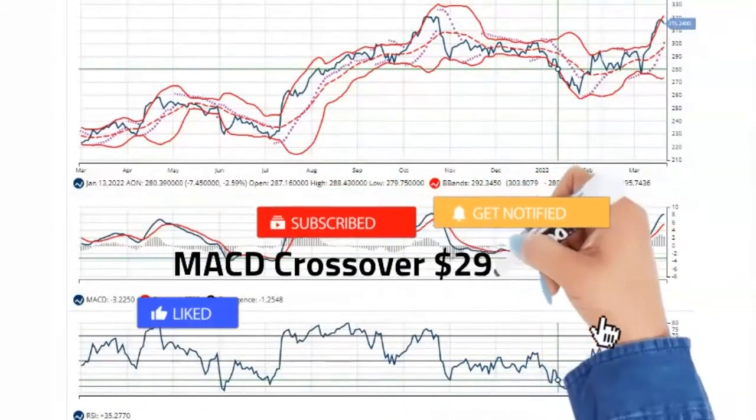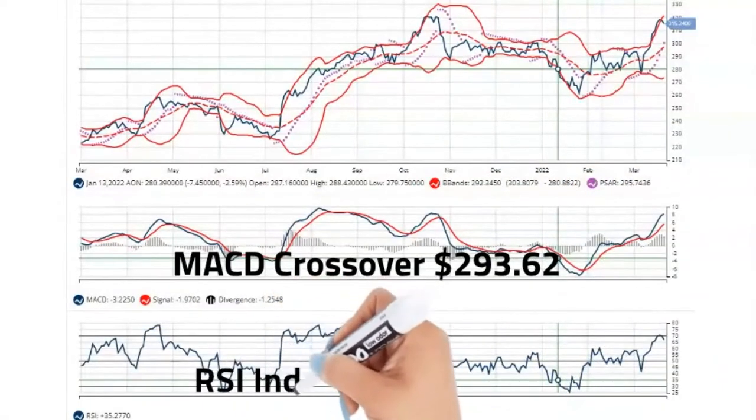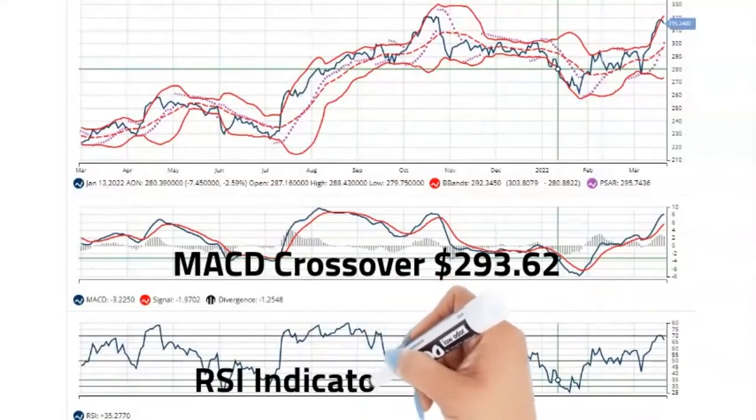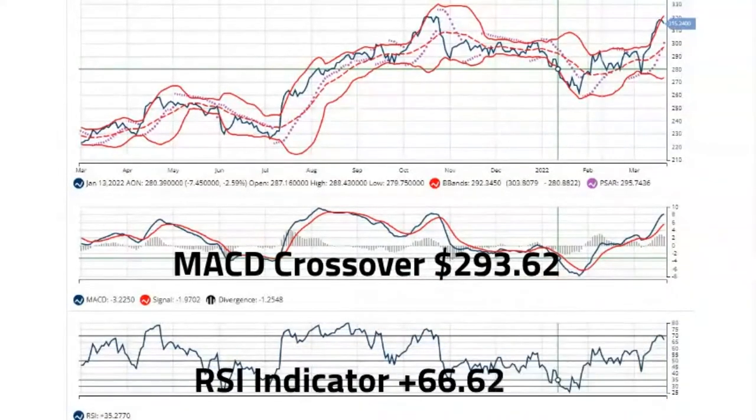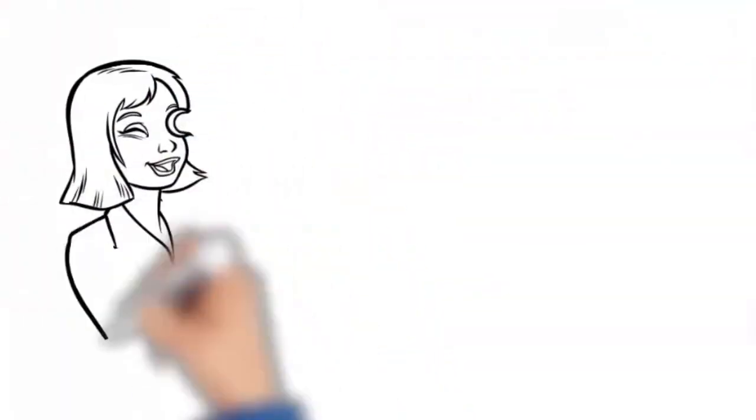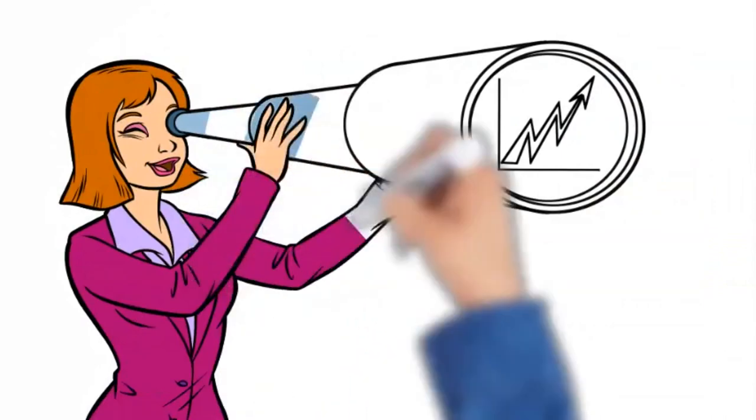Aon had a MACD crossover on March 10, 2022 at $293.62 and RSI is currently at plus 66.62 above the $0.50 centerline. Aon is showing short-term weakness. However, look for the longer-term bullish trend to continue.